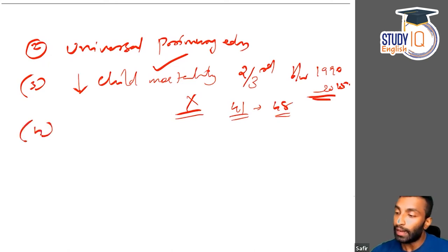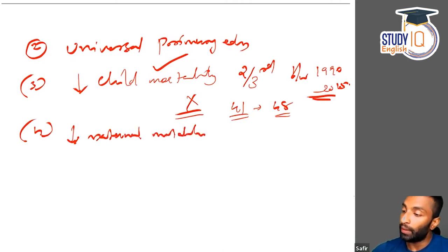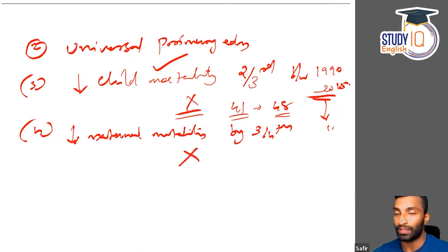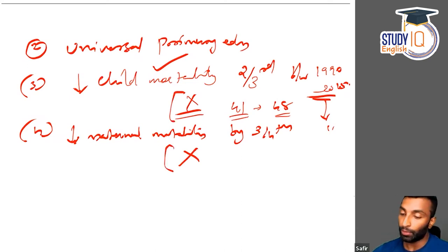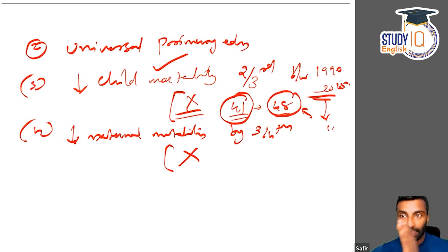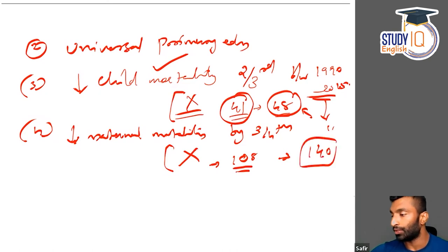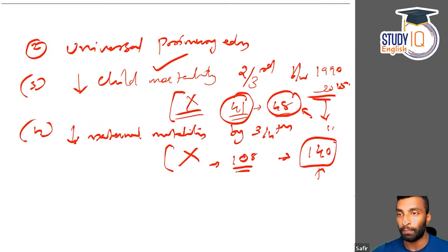The fourth goal was to decrease maternal mortality by three-fourths between this period. Child mortality was two-thirds versus maternal mortality three-fourths. This we also significantly missed. The target was 108, but ours is 140 — meaning 140 mothers die per one lakh deliveries. That's a bad figure.